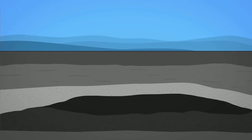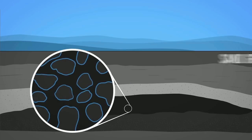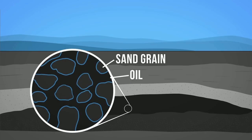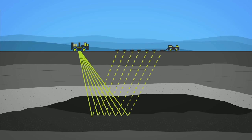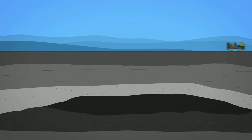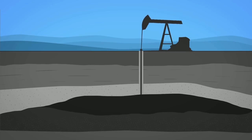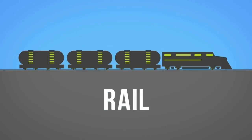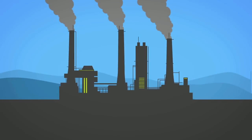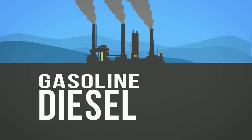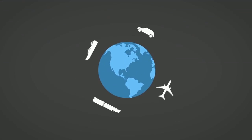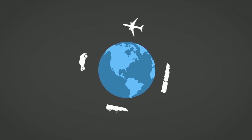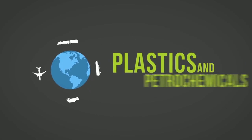Oil is found in underground geological formations called reservoirs. Through exploration activities such as seismic surveying, rock core sampling, and other advanced technologies, geologists locate oil reserves. Oil is extracted most commonly by drilling a well. Once recovered, oil is transported by pipeline, ship, rail, or truck to a refinery, where a complex refining process creates petroleum products like gasoline, diesel, jet fuel, asphalt, and many more. The world uses oil primarily to power its transportation system and to create synthetic products like plastics and petrochemicals.